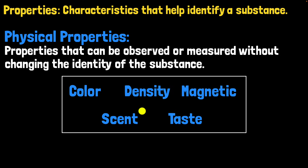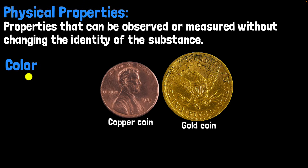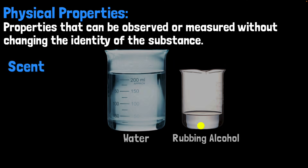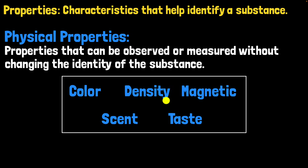What does that mean? Let's go back and look at these examples. If you go back to color — you measured or observed the color, and when you do that, you didn't change the identity of the substance. The gold coin still stayed gold; the copper coin still stayed copper. So measuring or observing did not change the identity. Similarly, when you were asking your brother to smell them, the act of smelling — figuring out the scent — did not change the identity of the substance. Water did not change; the alcohol did not change. It stays the same. If you look at all these properties, measuring or observing them does not change the identity of the substance at all.